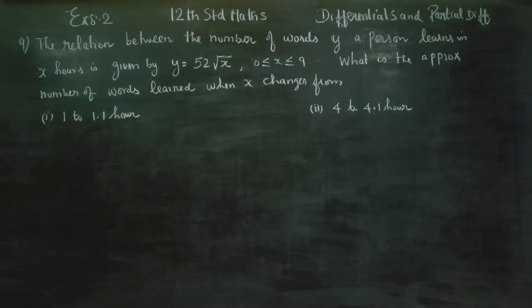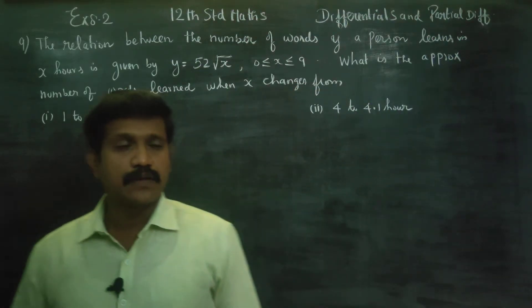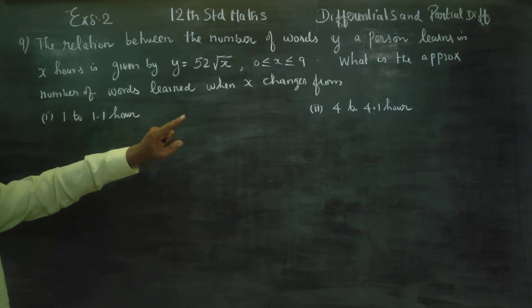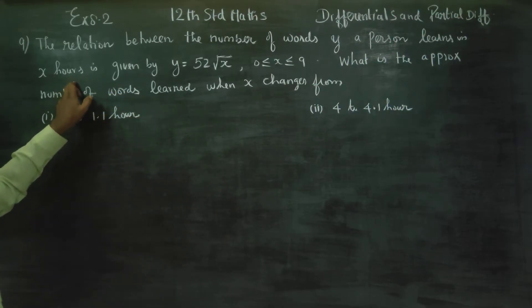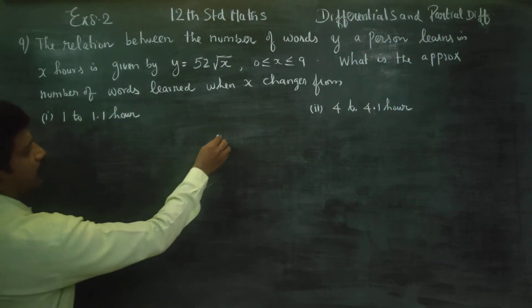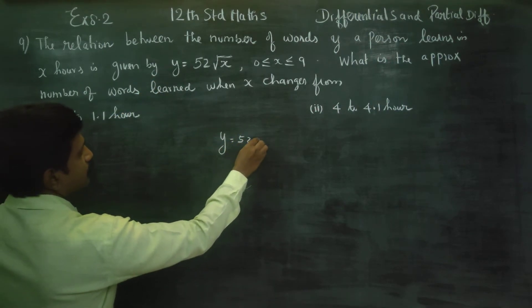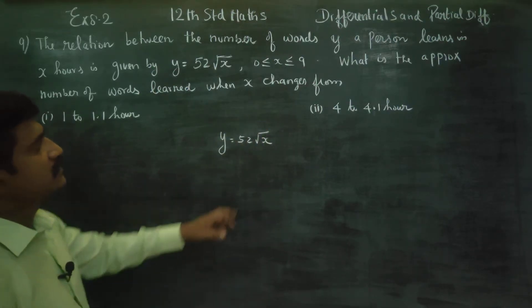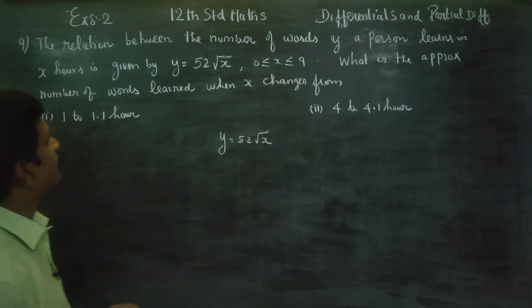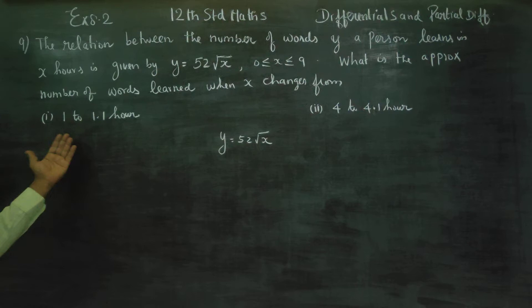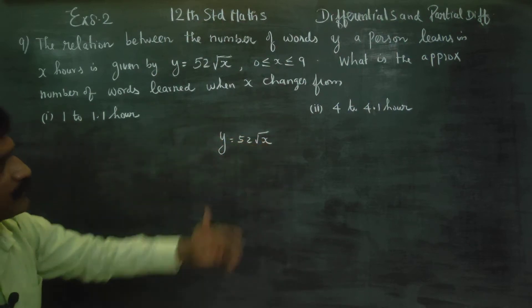Dear 12th standard students, in exercise number 8.2, the relation between the number of words y a person learns in x hours is given by y equals 52 root x. What is the approximate number of words learned when x changes from 1 to 1.1 hours and 4 to 4.1 hours?